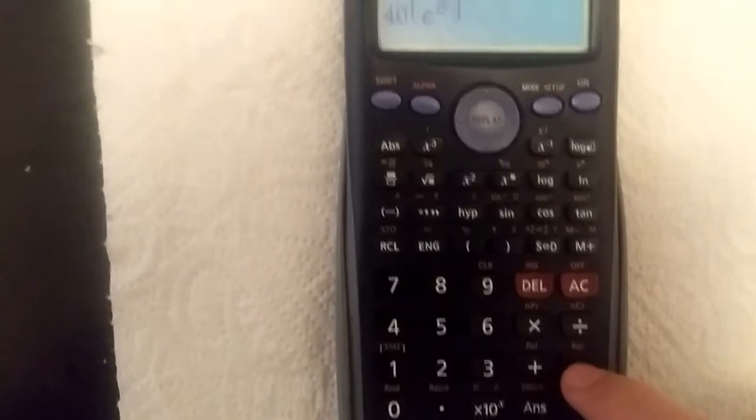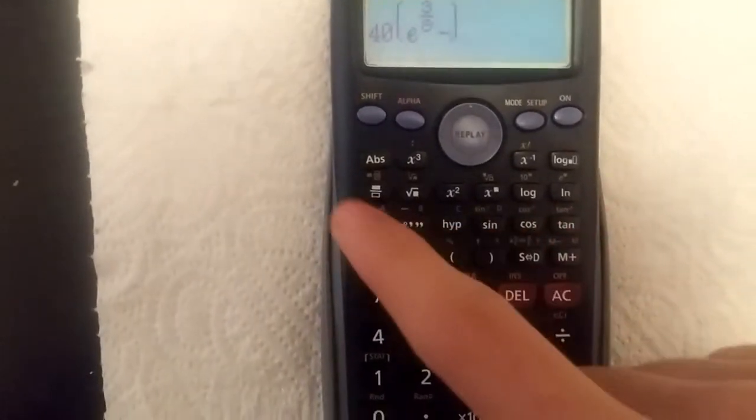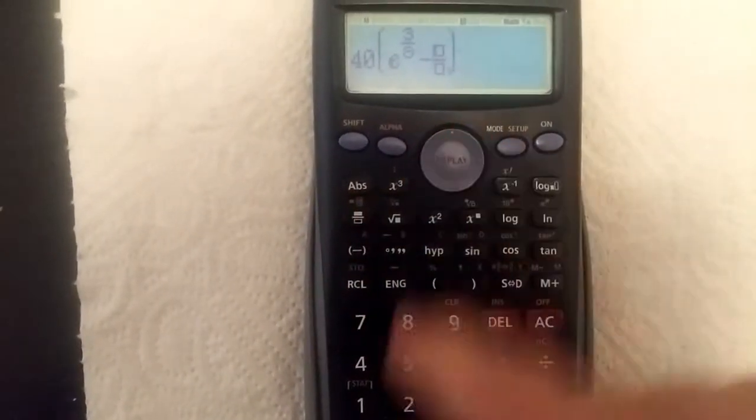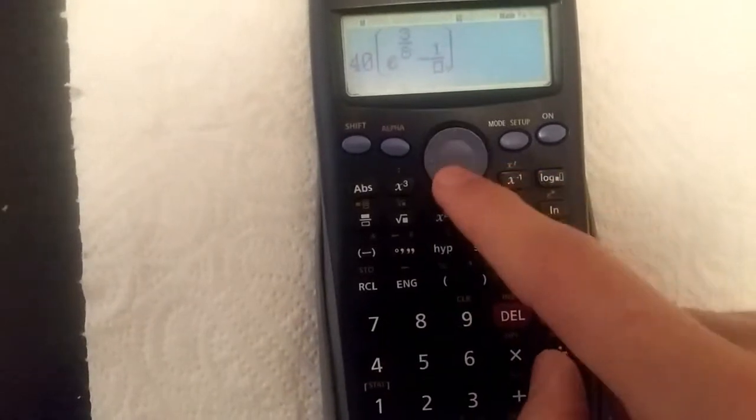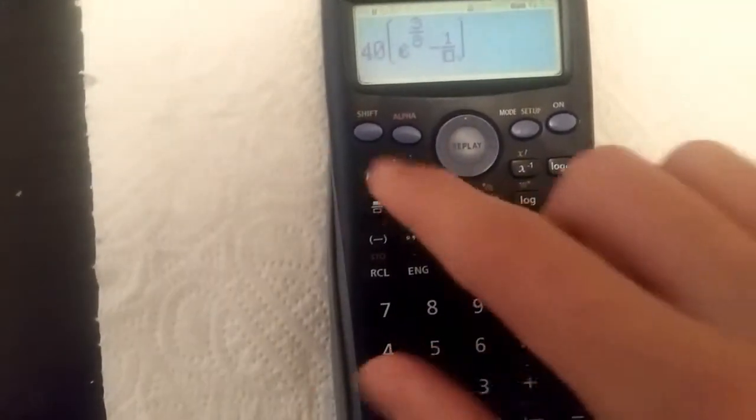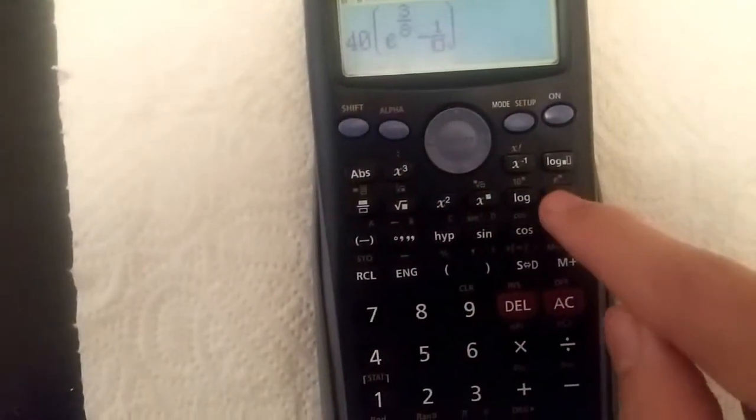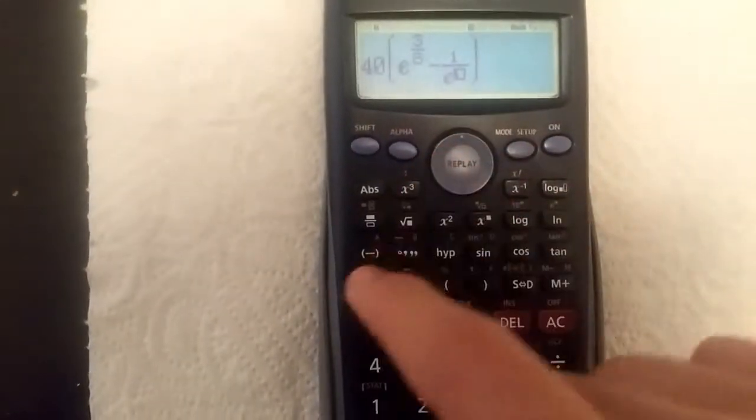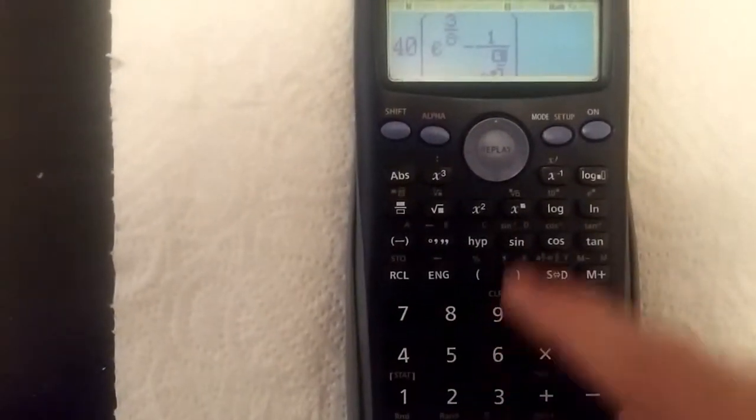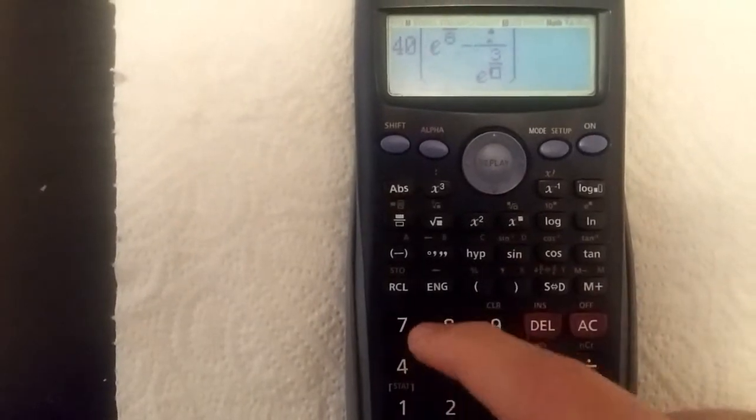Okay, what do you do next? Now you press the minus sign and then you do the same thing. Now you do the fractions. It would be 1 over E to the power of 3 over 8. So shift E and then you put the fraction. 3 over 8.